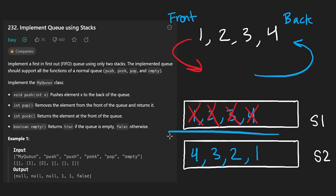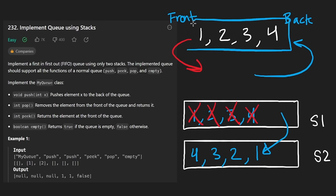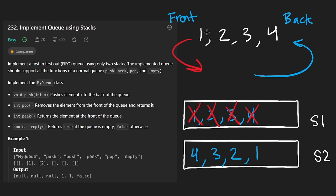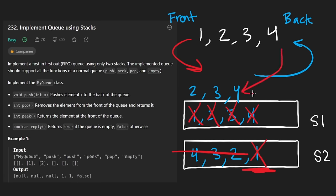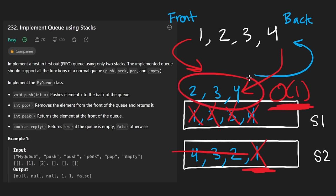We've reversed the order, and that helps us because now when we pop from stack two, we're actually popping the correct element. This is what the real queue would look like: one, two, three, four — we push to the back and remove from the front. So far so good. We can now pop the correct element. Pushing is constant time, but popping takes O(n) every time to move all elements to the other stack. They claim we can somehow get constant average time — how is that possible?